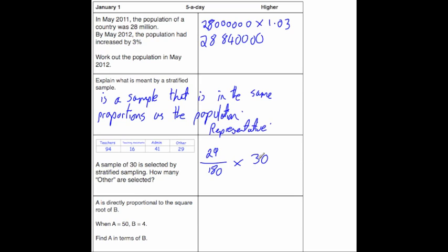And whenever we do it on our calculator we get 29 over 180 times by 30. And whenever we do that we get that is equal to 4.83 recurring.